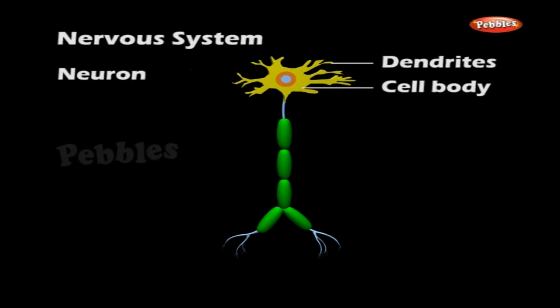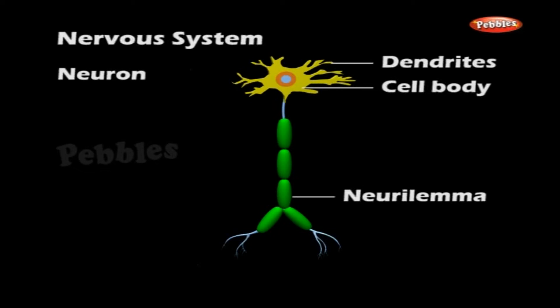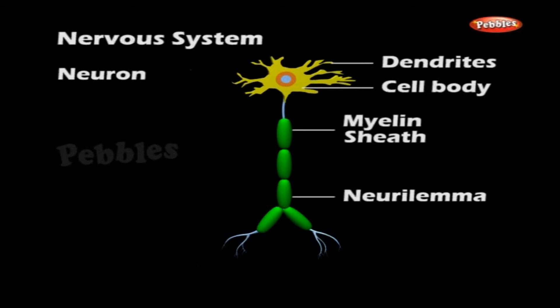Nerve fibers are collected into bundles in a nerve. Each nerve fiber is covered with a continuous sheath called neurolema. Some nerve fibers are covered with a lipid-rich insulating layer called myelin sheath. At intervals, there are constrictions called nodes of Ranvier. The junction between two neurons is called synapses.